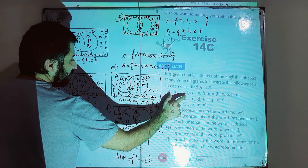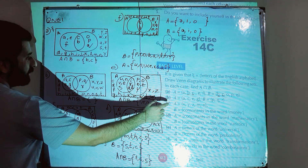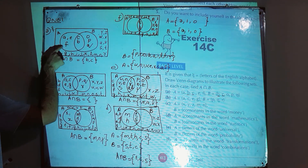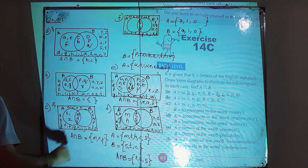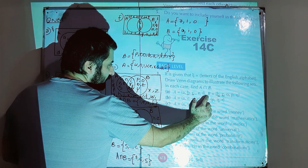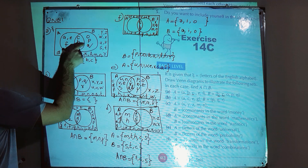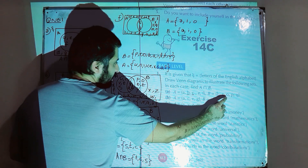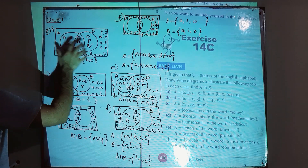After b and c, the elements left in A are a, e, and f. These three are written in the section that only belongs to A, because they are elements that belong only to A. For set B, the elements b and c are already written in the overlapping part. The remaining elements o, p, and q will be written in the section that only belongs to B.